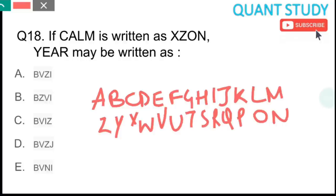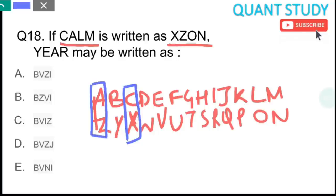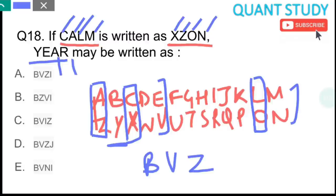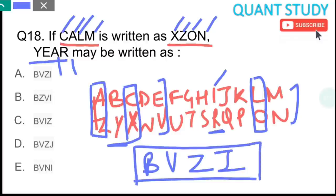Question 18: Write alphabets A to M in one line and N to Z reversed below them to get opposite letter pairs. Using this, CALM was coded as X, Z, O, N — because C's opposite is X, A's opposite is Z, L's opposite is O, and M's opposite is N. Now we find the code for YEAR: Y's opposite is B, E's opposite is V, A's opposite is Z, R's opposite is I. So the code is BVZI. The answer is option A.